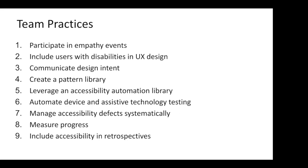Leveraging an accessibility automation library is great because automating the low-hanging fruit can actually speed up your development process and help you catch accessibility issues as early as possible. That's what we mean by shift left — you don't want to find accessibility defects in production, ideally not even on your dev server. The best you can do is ensure you're making a pull request with accessibility tests already having taken place.